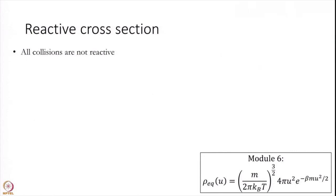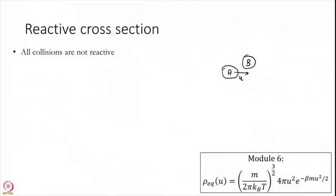So how do we account for non-reactive collisions? The way we do it is as follows. Think of particle A moving forward with some velocity U colliding with B — that is how we derived the whole Collision Theory — and we had approximated U as the average thermal speed. Today we are going to do something more accurate. We will start with our basics and write K(U) equal to π(R_A + R_B)² times U.